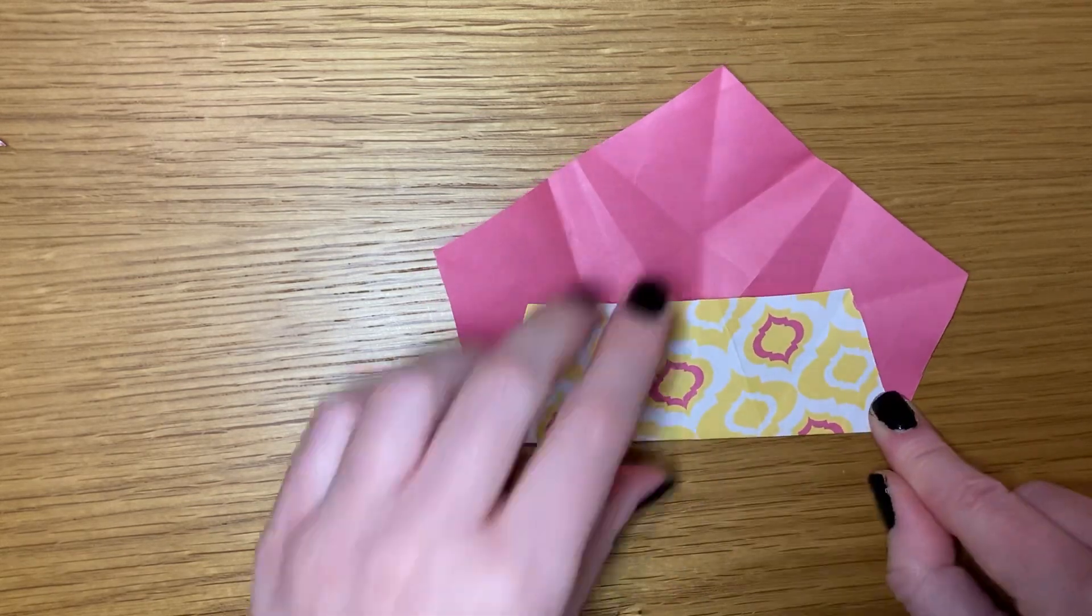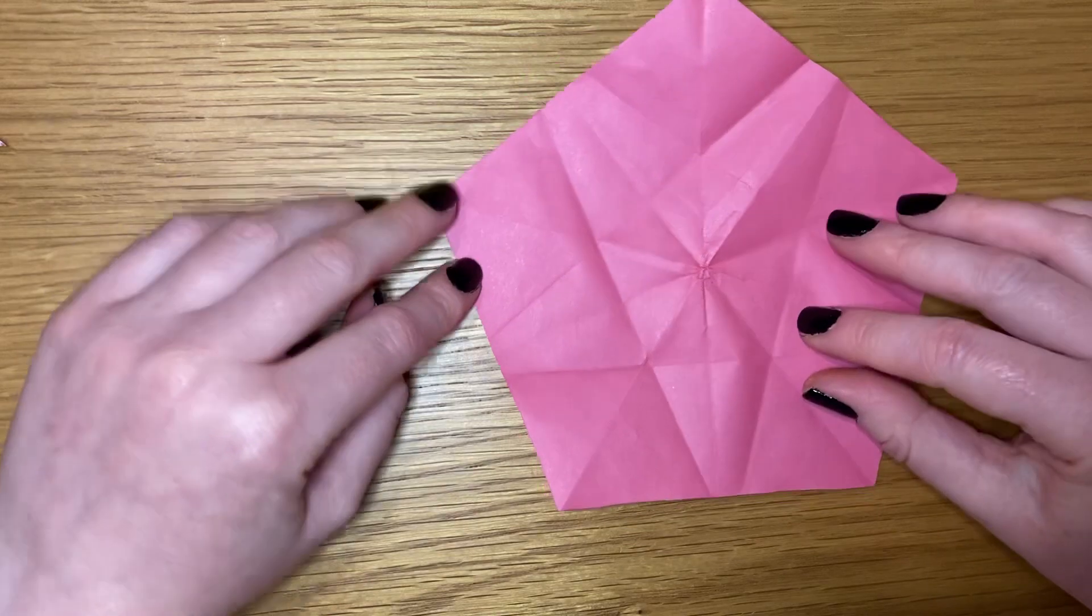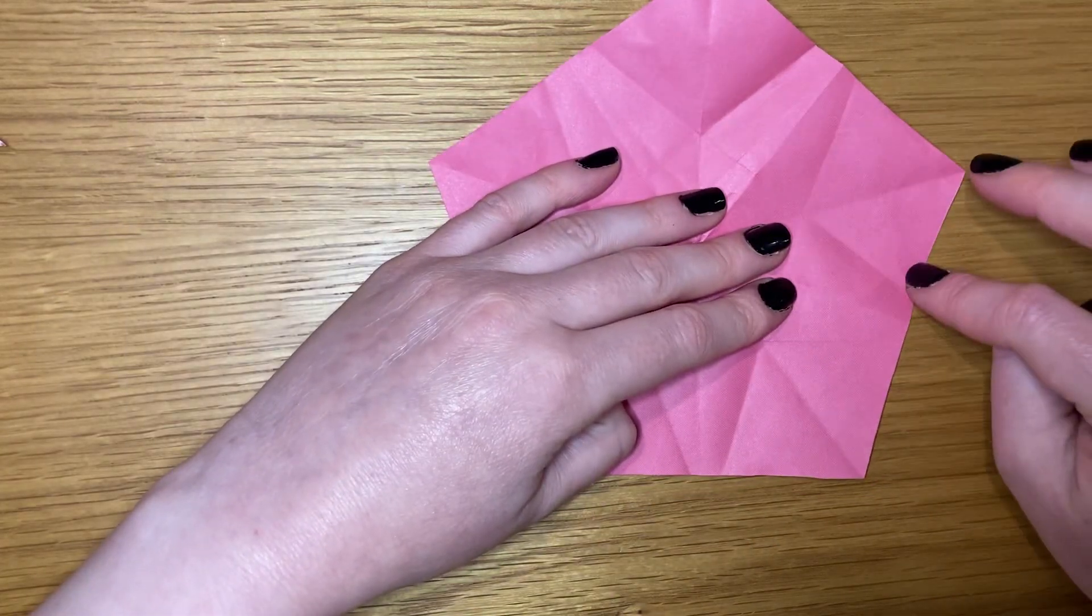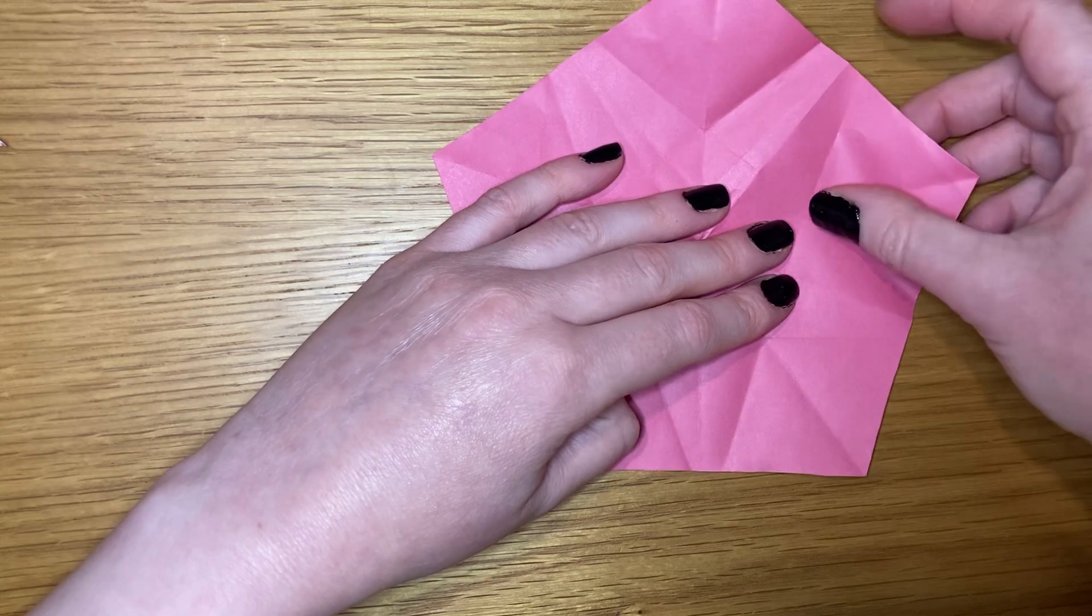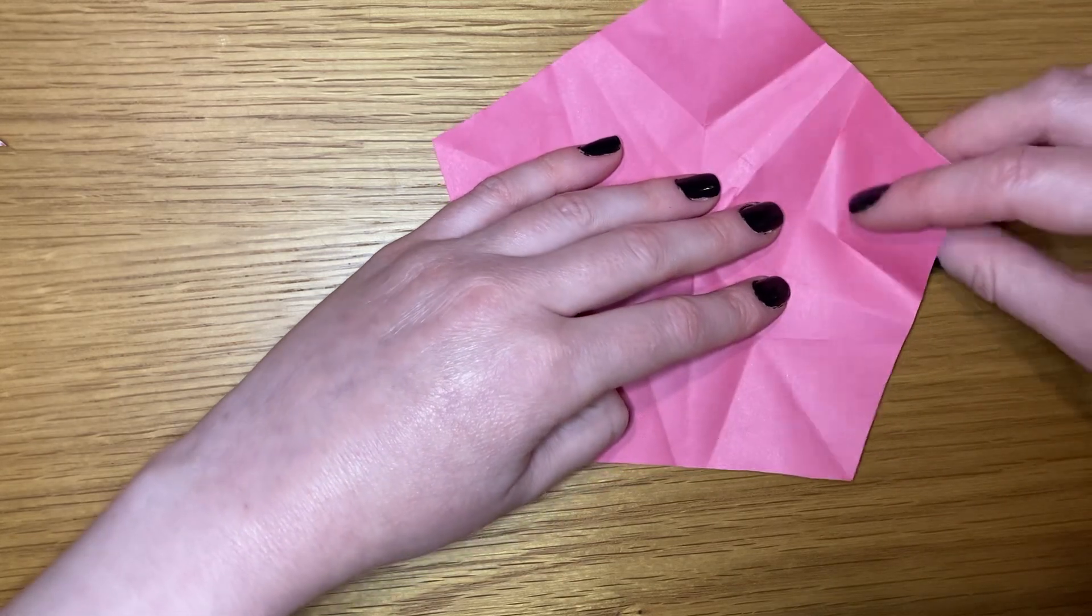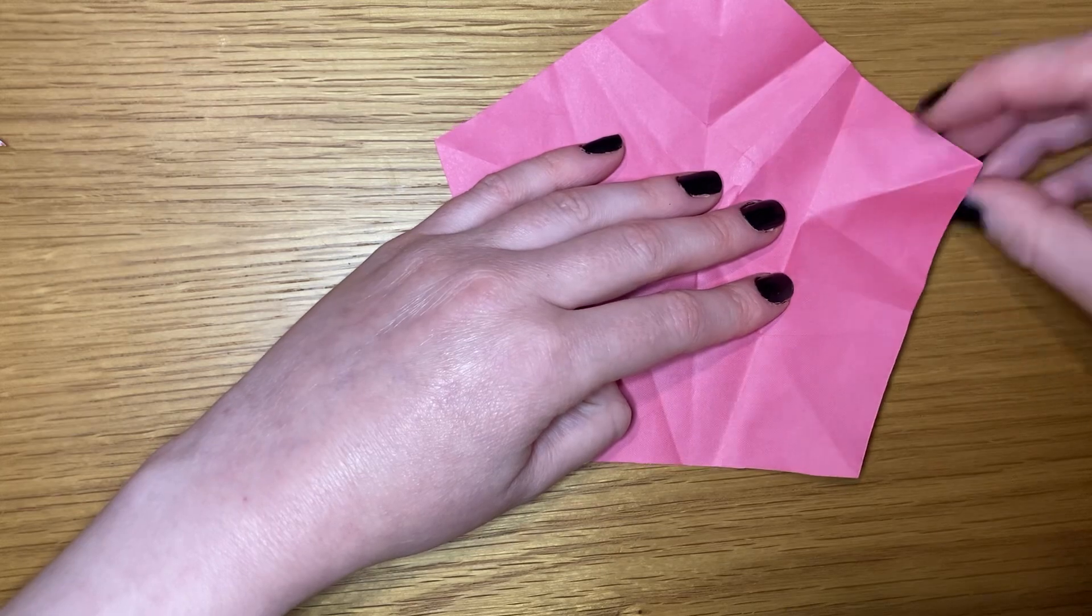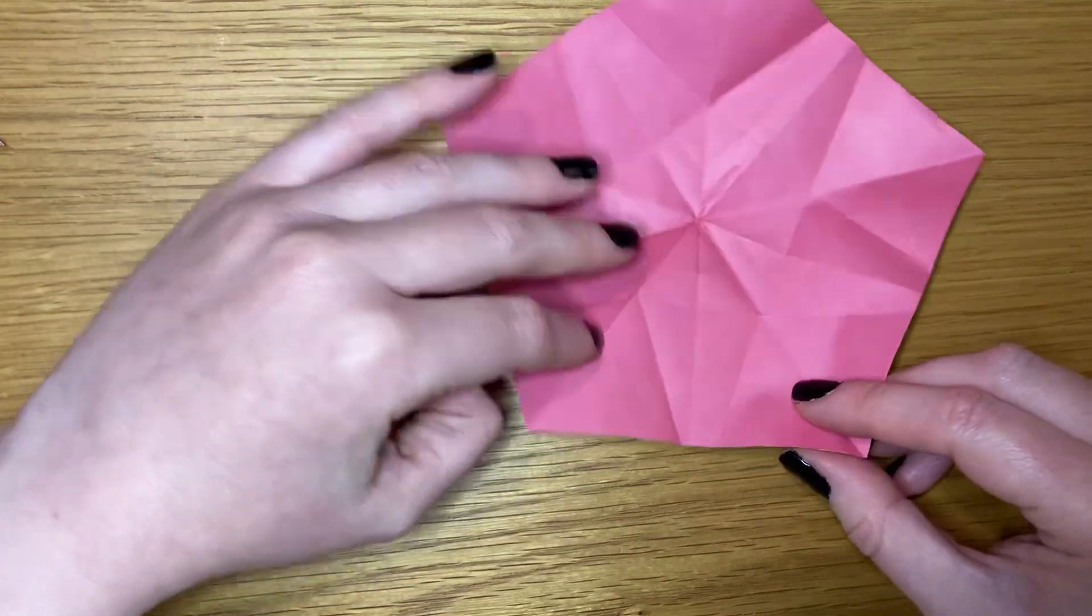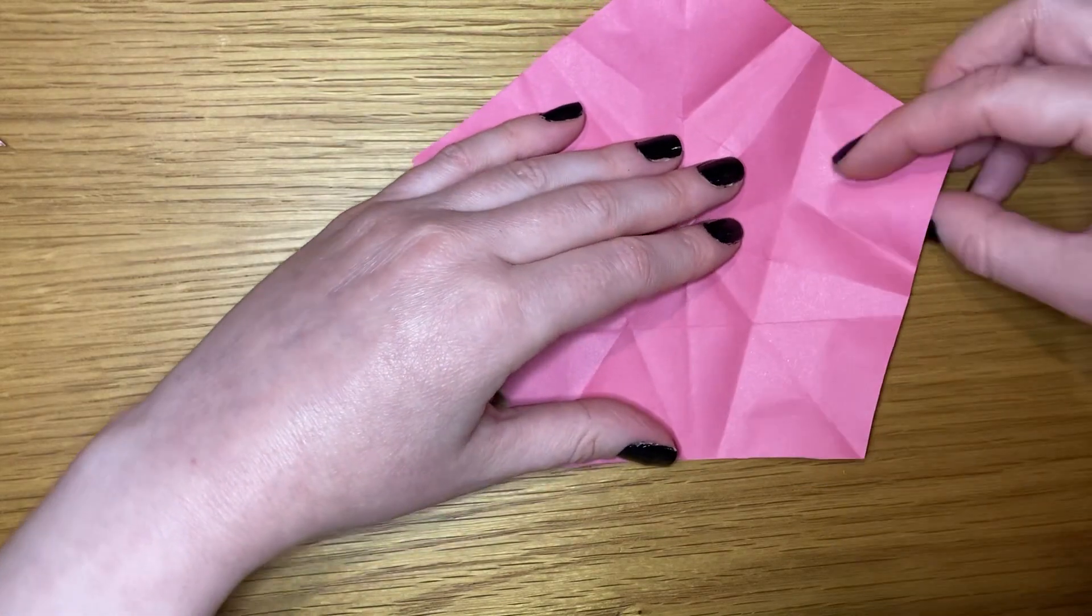When we've done all our sides, we're going to open it back out. You'll see now at each of our points, we've got a diamond shape and a line separating it. We want to make it so that all these lines, some of them point in, we want to make it so that they all point out. Most of them will.